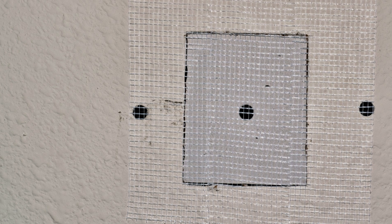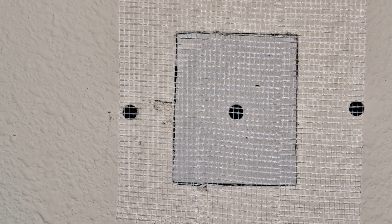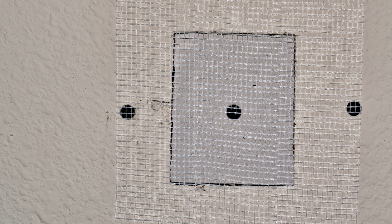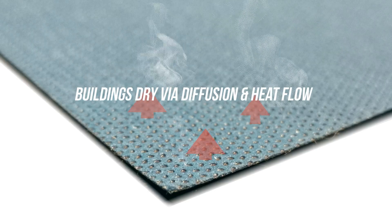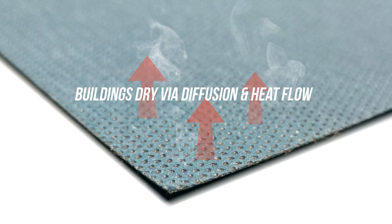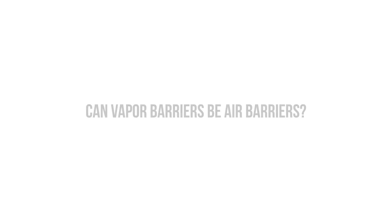By simply sealing that hole so that it's airtight, we can drastically reduce the amount of moisture passing through the walls by 99%. We've all heard the phrase 'buildings need to breathe,' and there's a lot of confusion around what this means. Buildings need to dry — people need to breathe. Buildings dry primarily via vapor diffusion and heat flow, and they get wet through air leakage.